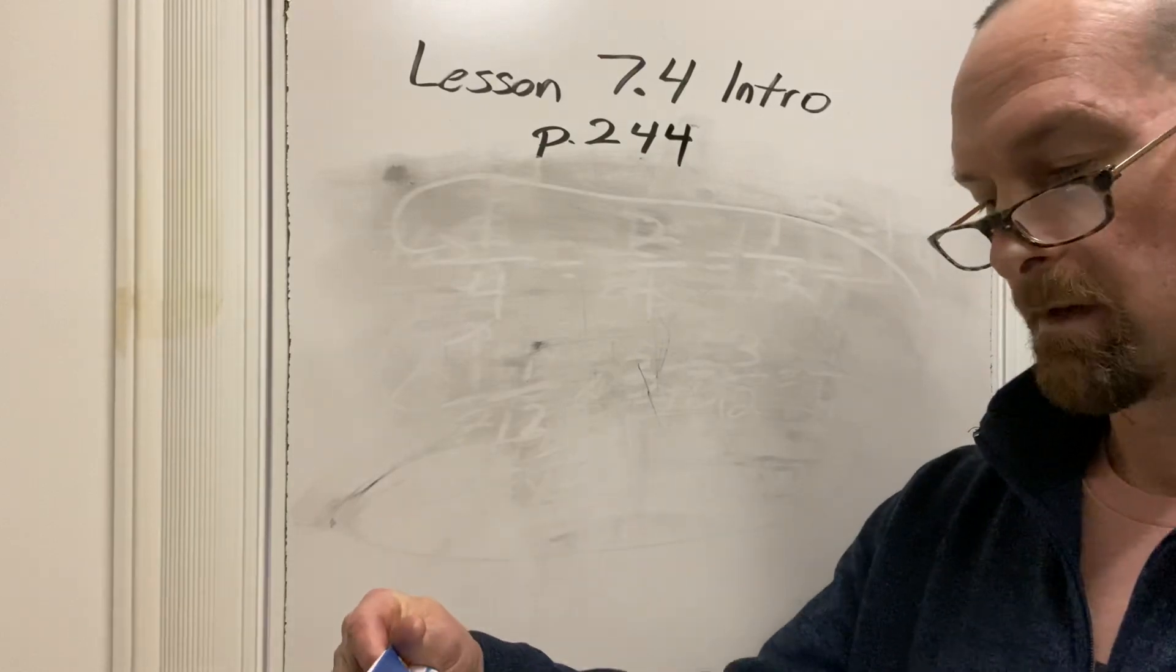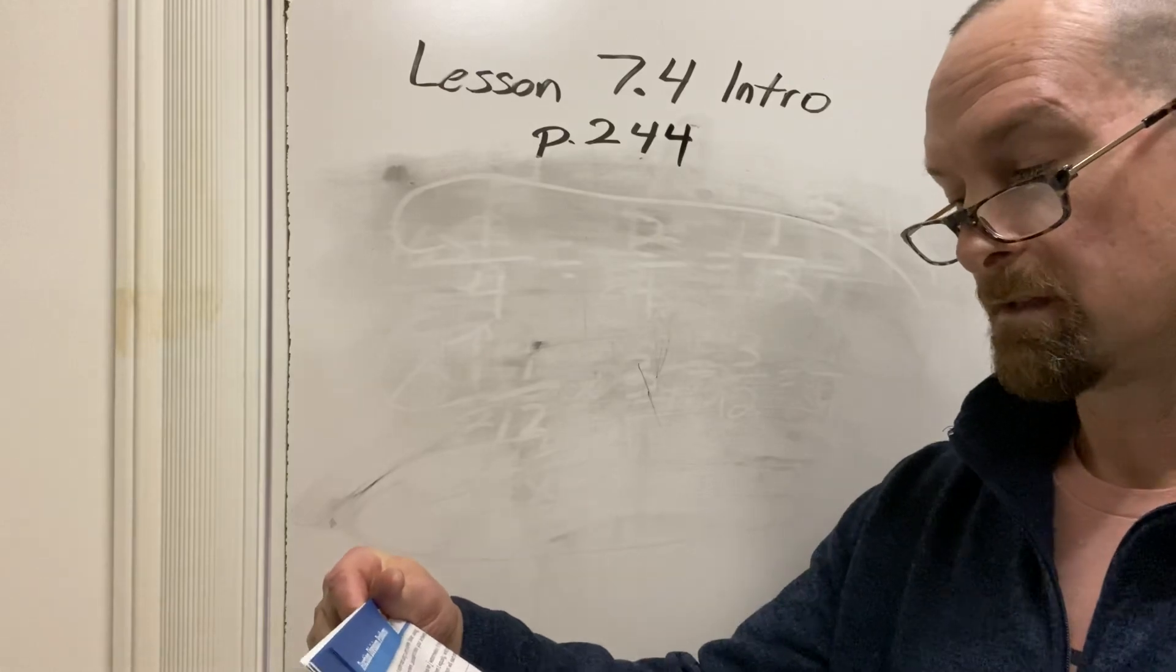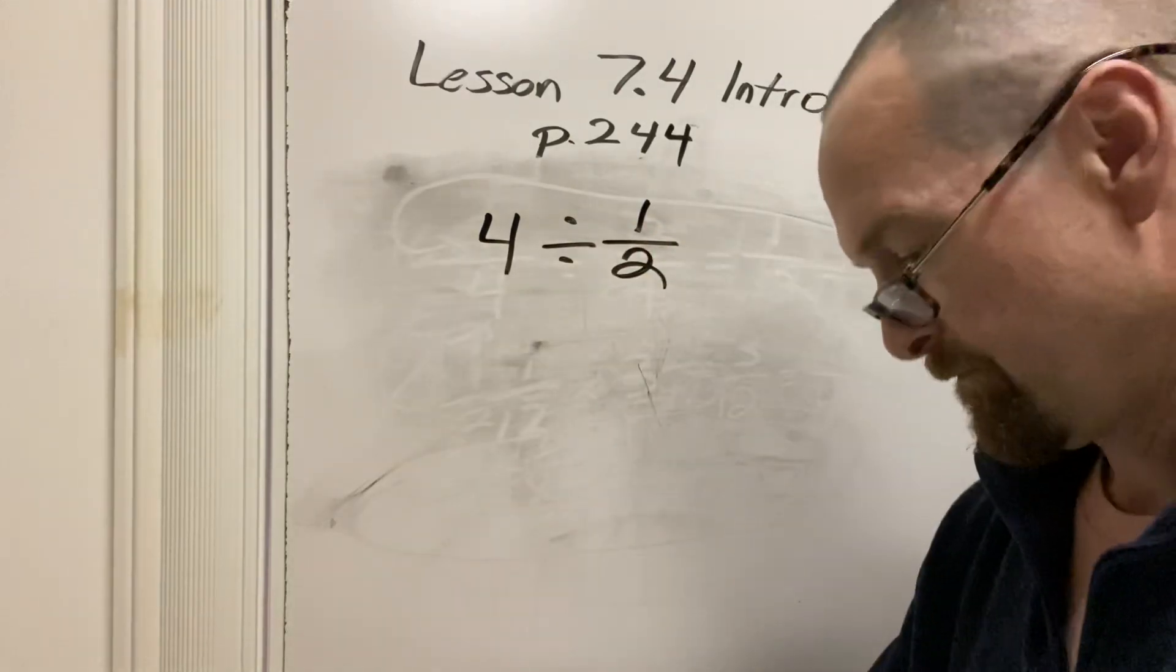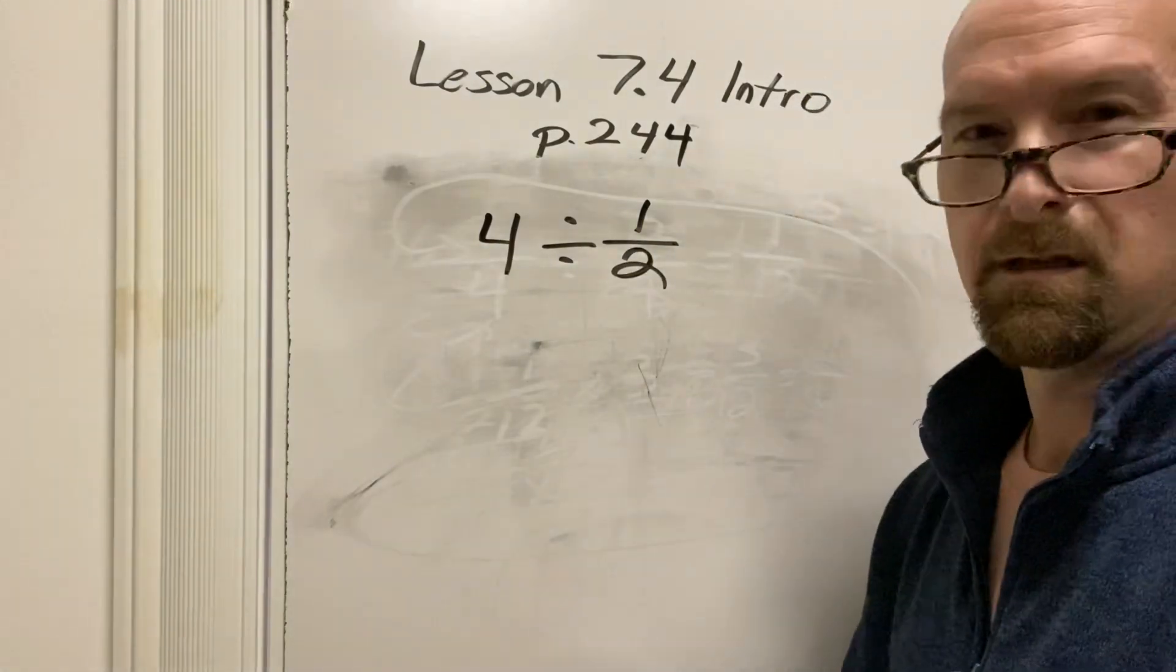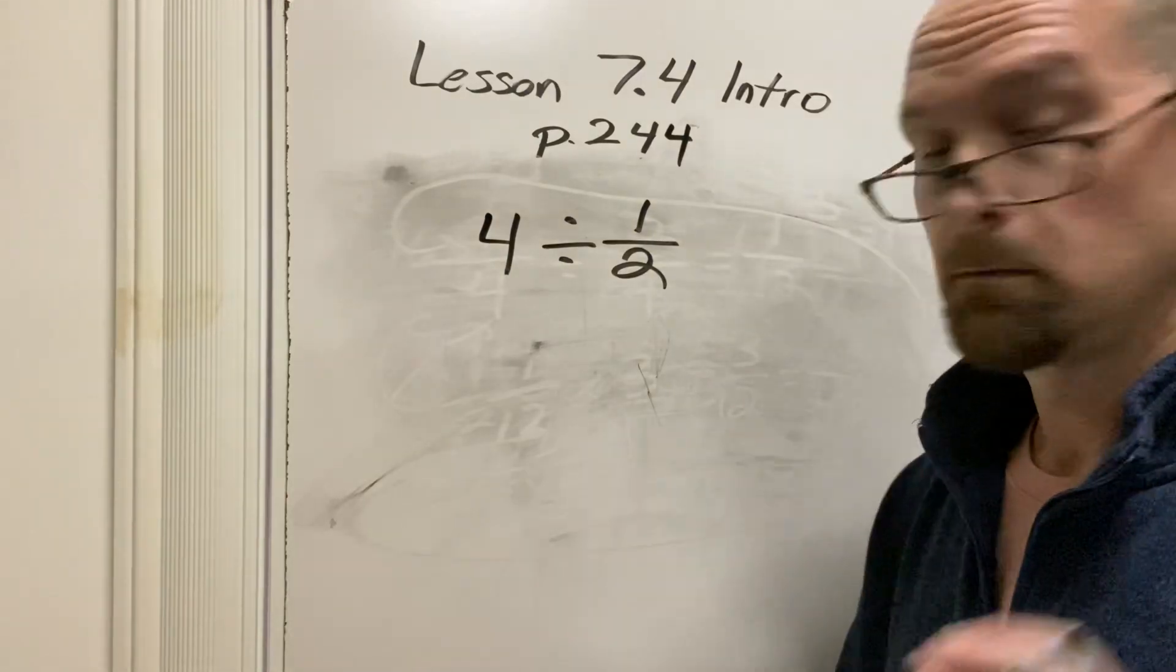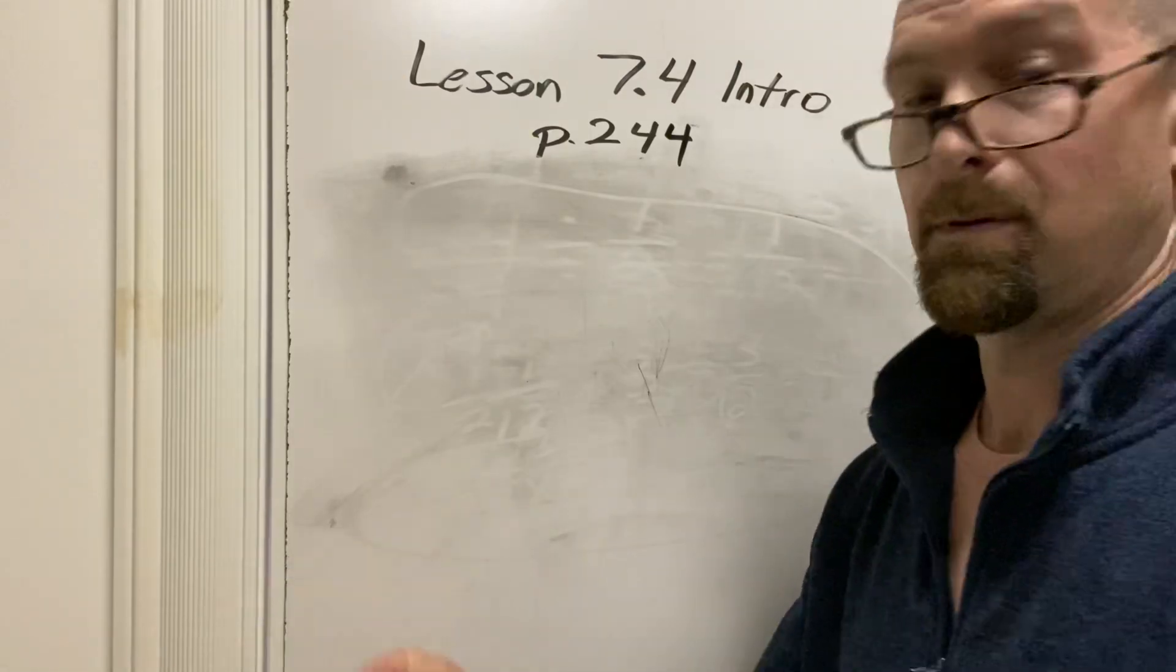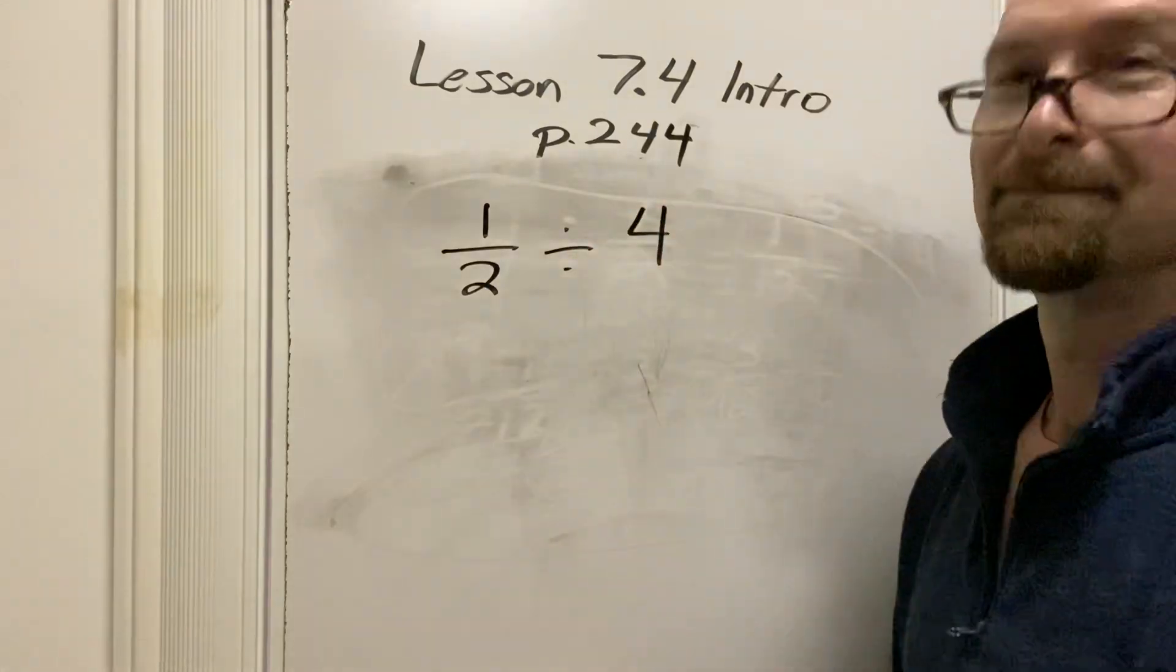Four students are running a relay race that is a half a mile long. Each student runs the same distance. How far does each student run? Okay. So, some of you are going to want to do this, right? Four divided by half, right? Hmm. Really? You're dividing up the four kids? Like, that's kind of gross. Like, samurai sword action? No. Keep those thoughts to yourself. This is math class. There's no place for blood. All right, it's the half a mile that is getting divided up. The half a mile is getting divided up by four people.